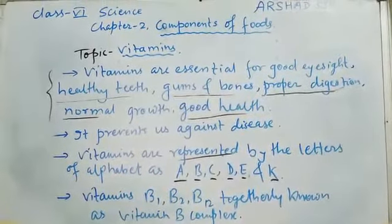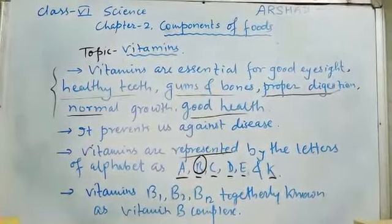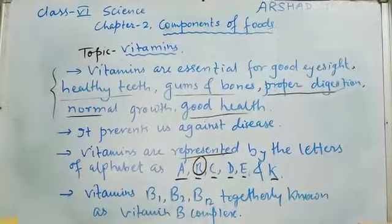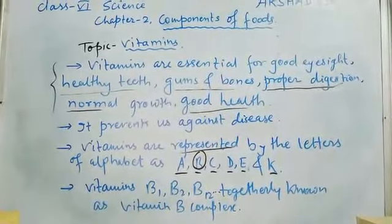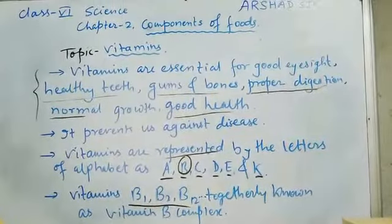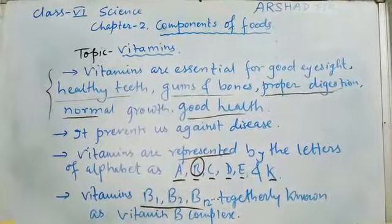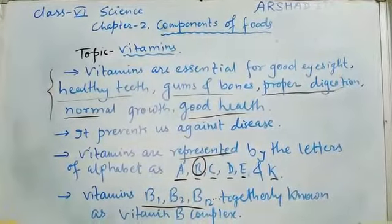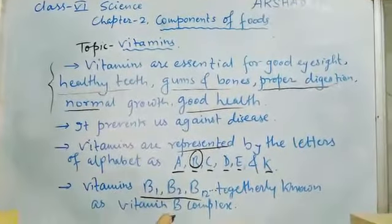Vitamin B has many sub-forms: Vitamin B1, B2, B3, B4, B5, and Vitamin B12. All these Vitamin B parts together are known as B complex.